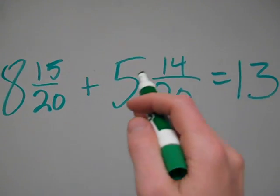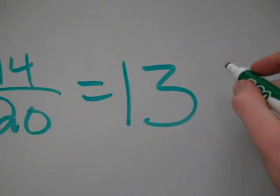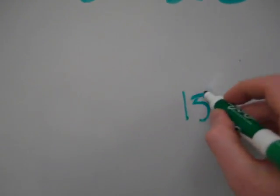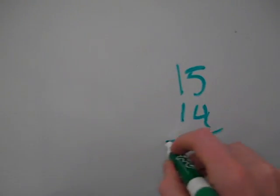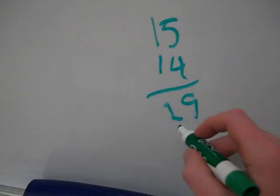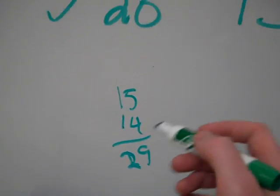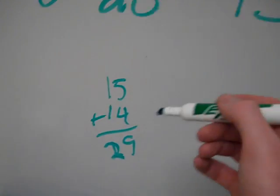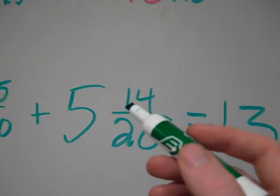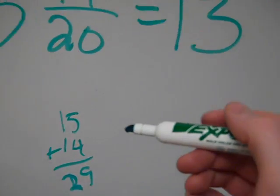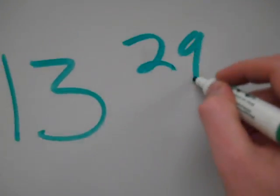I'm going to add my fractions. 15/20 plus 14/20 is 29/20. If you're not sure, you can always just drop down and do some quick addition off to the margin. If you didn't know what 15 and 14 is, you can always add them off to the margin. But it's 29/20.